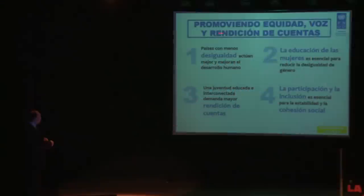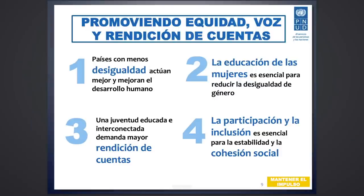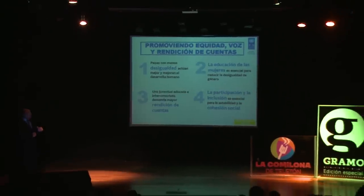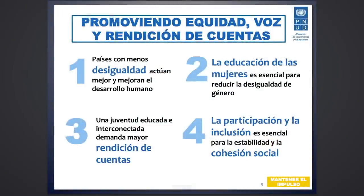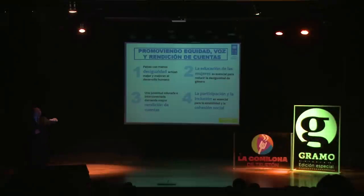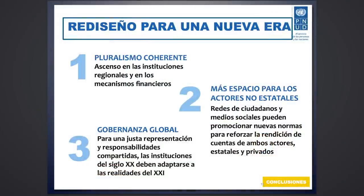¿Qué podemos hacer para sostener el desarrollo humano para las generaciones que vienen? En primer lugar, la promoción de equidad, voz y rendición de cuentas. En segundo lugar, la educación de las mujeres es esencial para reducir la desigualdad de género. En tercer lugar, una juventud educada e interconectada demanda mayor rendición de cuentas. Y cuarto, la participación y la inclusión es esencial para la estabilidad y la cohesión social. Tiene que haber un rediseño para una nueva era, un pluralismo coherente y ascenso en las instituciones regionales.